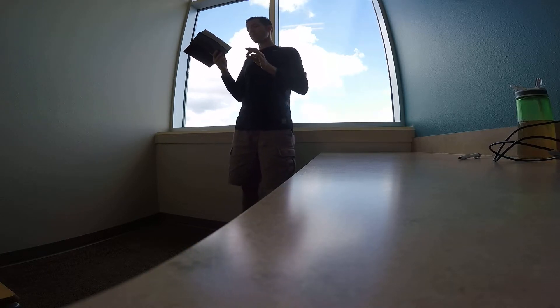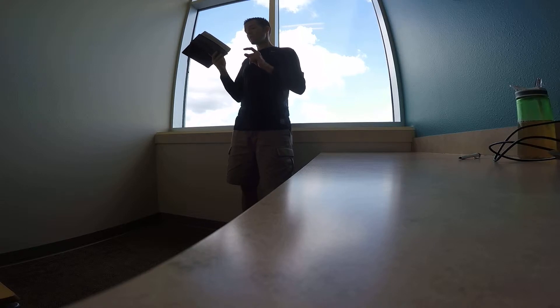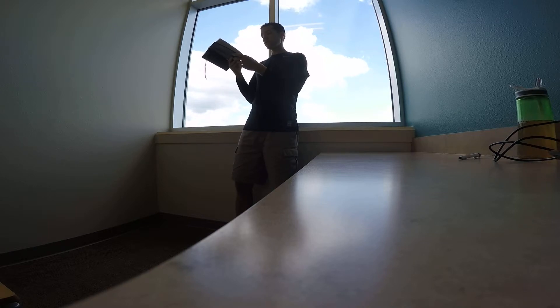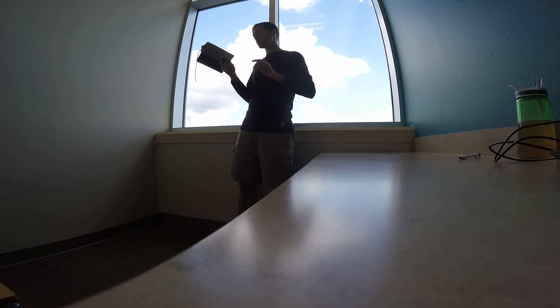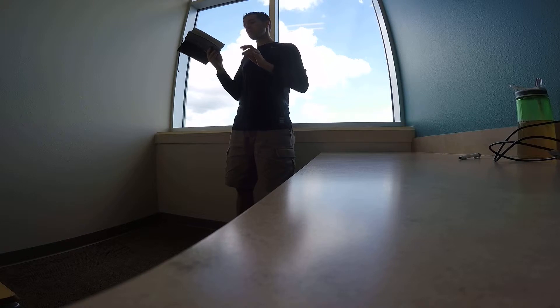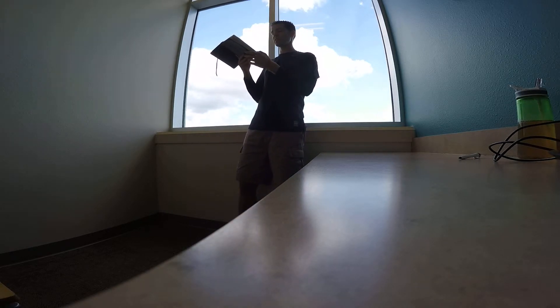Then they said to him, What shall we do to you, that the sea may quiet down for us? For the sea grew more and more tempestuous. He said to them, Pick me up and hurl me into the sea, and the sea will quiet down for you. For I know it is because of me that this great tempest has come upon you. Nevertheless, the men rowed hard to get back to dry land, but they could not. For the sea grew more and more tempestuous against them. Therefore they called out to the Lord, O Lord, let us not perish for this man's life, and lay not on us innocent blood, for you, O Lord, have done as it pleased you. So they picked up Jonah and hurled him into the sea, and the sea ceased from its raging. Then the men feared the Lord exceedingly, and they offered a sacrifice to the Lord and made vows.